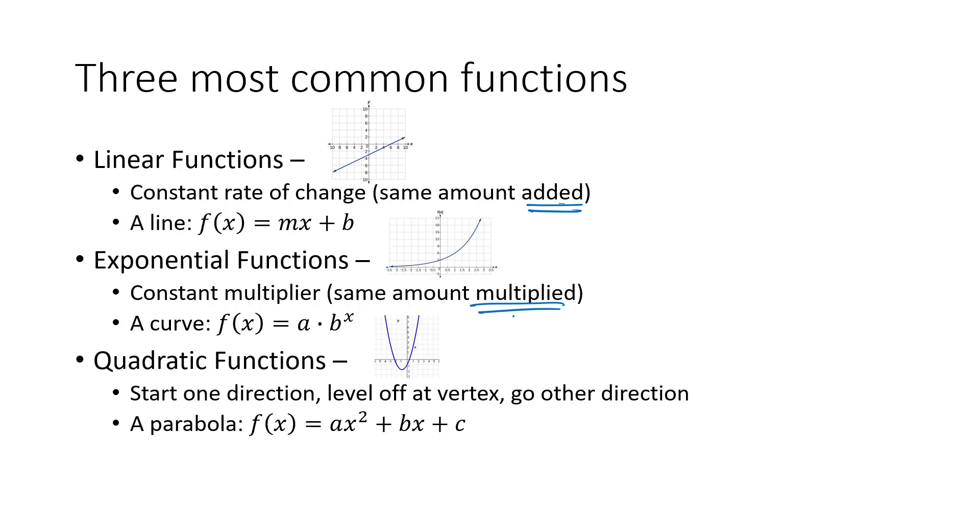That change of direction is often a clue that we are dealing with a quadratic function. So that change of direction, leveling off at the vertex. And the parabola is always of the form f(x) = ax² + bx + c.